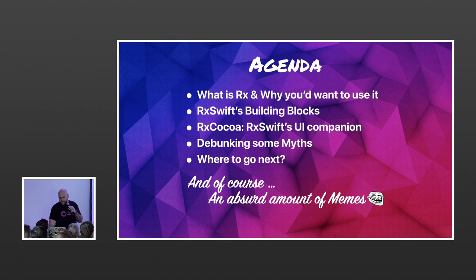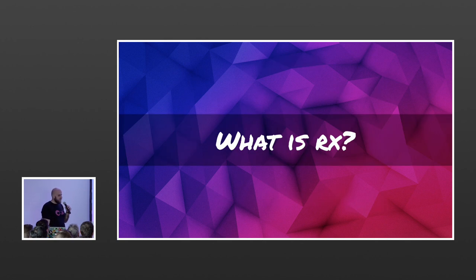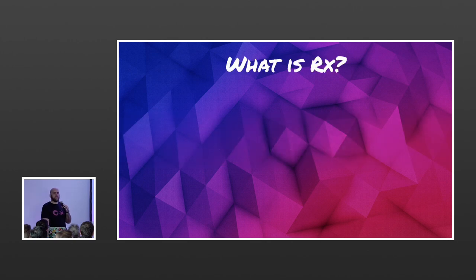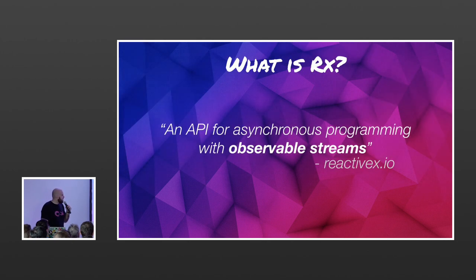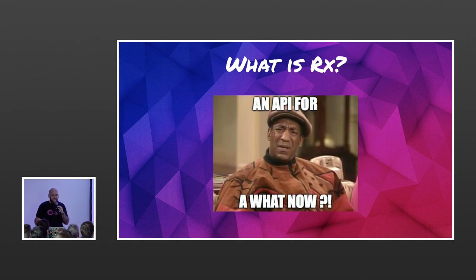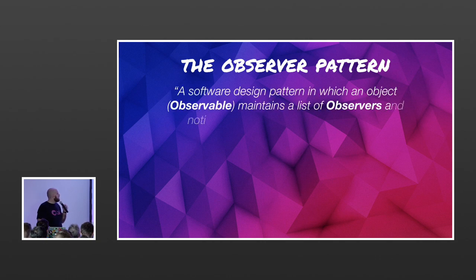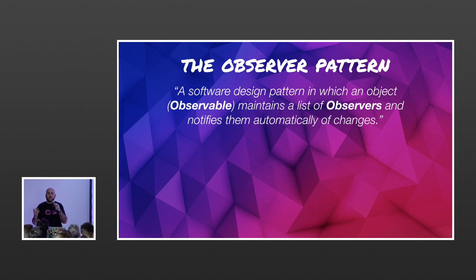Let's start with the first thing: what is Rx? The dictionary definition is 'an API for asynchronous programming with observable streams' — that's the definition by ReactiveX. To understand this, you need to start with something called the observer pattern. It's a design pattern where we have one object called an observable and a list of objects observing it called observers.